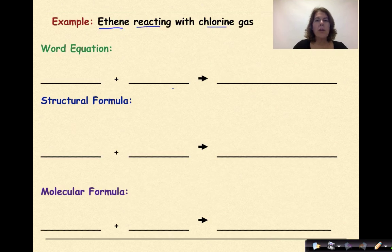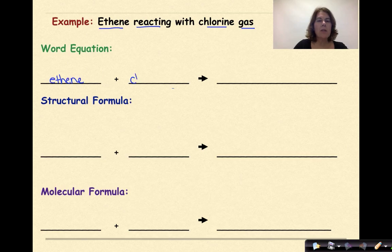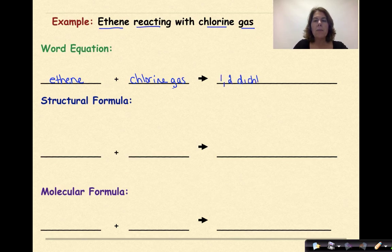Ethene reacting with chlorine gas. So our word equation, we'd start with our reactant of ethene, chlorine gas. And the important thing to note here is that we're only going to have one product. Because we're taking ethene, which has a double bond, and making it into a single bond. So each carbon is going to pick up a chlorine. So this is going to be one, two, dichloroethane.